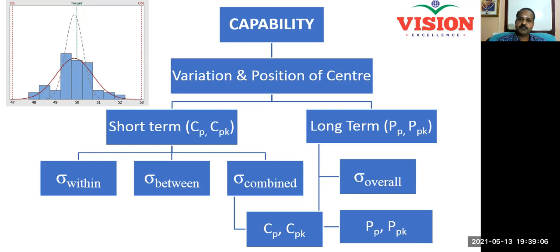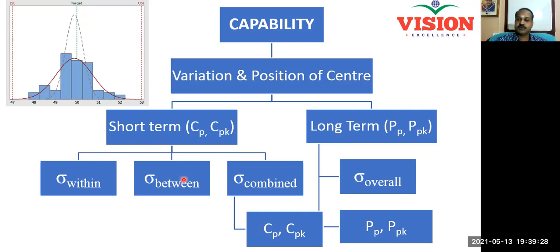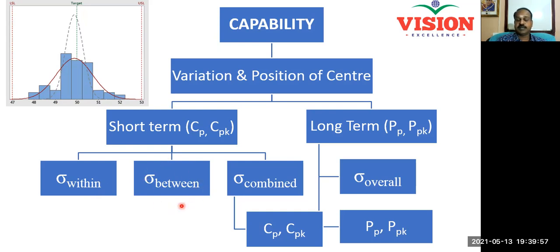However, if you conduct the study over a short-term, even within the short-term there will be two types of variation: within-batch variation and between-batch variation. Because we always produce products in batches, we take a sample from every batch. The samples taken within a particular batch will have some variation captured by the within-standard deviation. The variation between the subgroups can be captured by calculating the between-standard deviation.